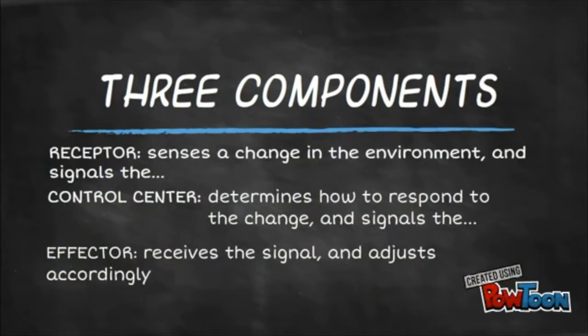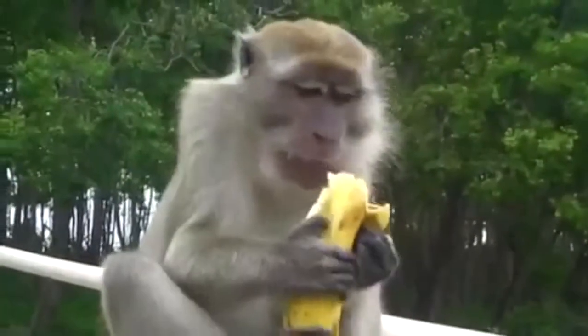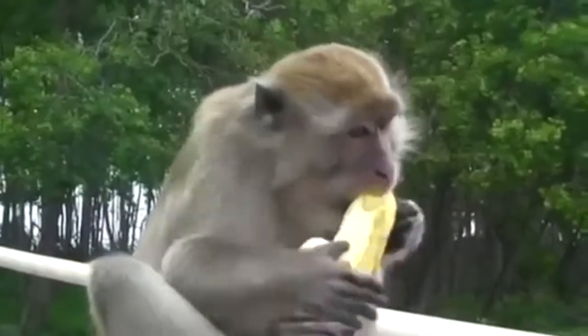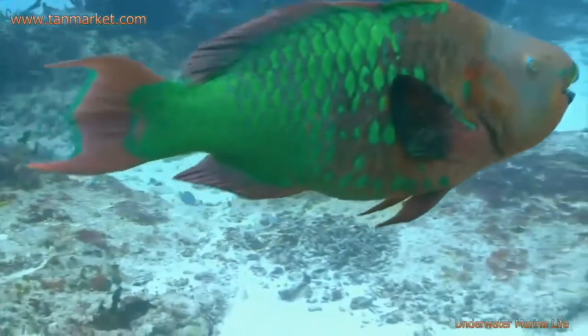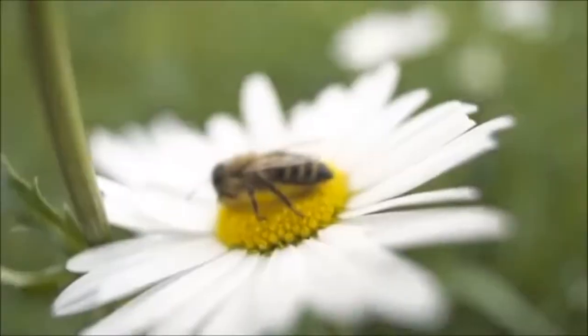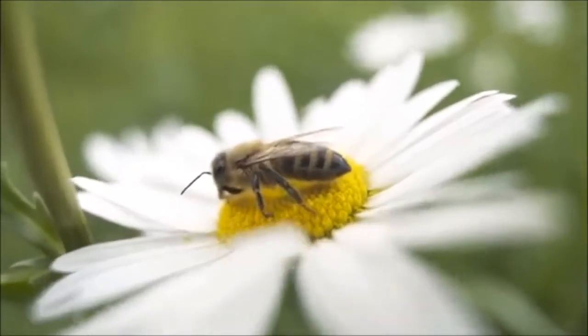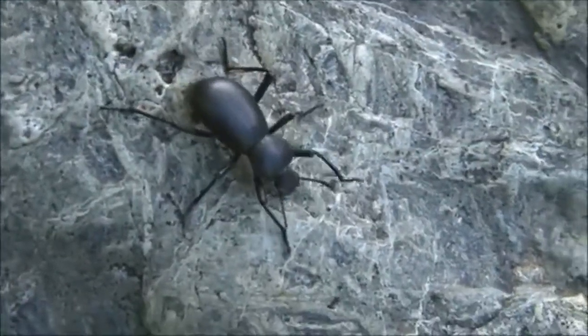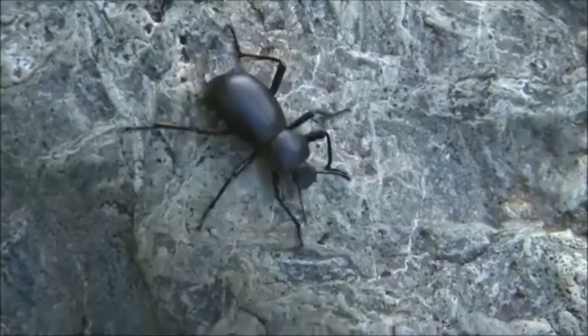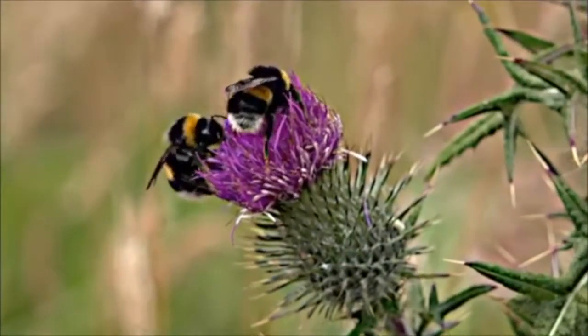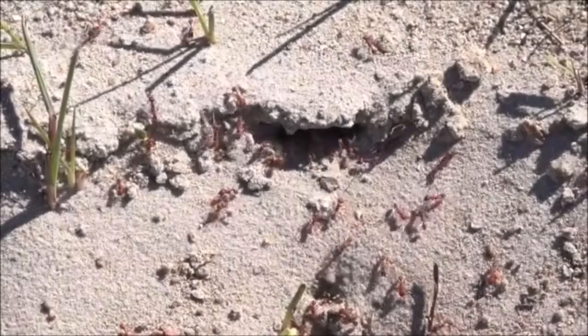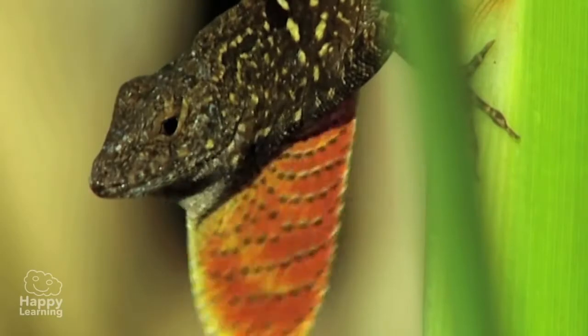Oxygen is required in order to release energy contained in food. However, since oxygen is easily available in the atmosphere for terrestrial animals, oxygen may be limiting for aquatic organisms. Minute terrestrial organisms take in oxygen by diffusion across the body surface. Insects have tracheal tubes that open to the outside through openings or spiracles on the body wall. The tracheal tubes carry oxygen to the interior of the body by allowing diffusion to take place.